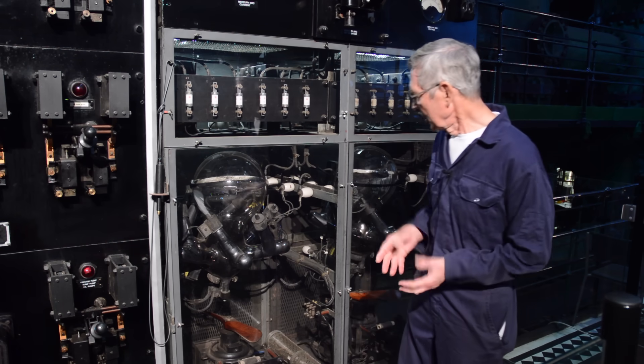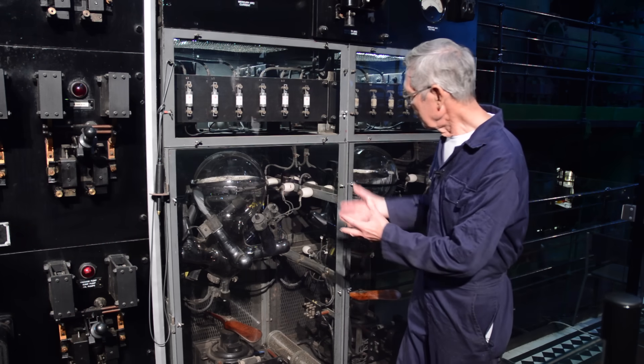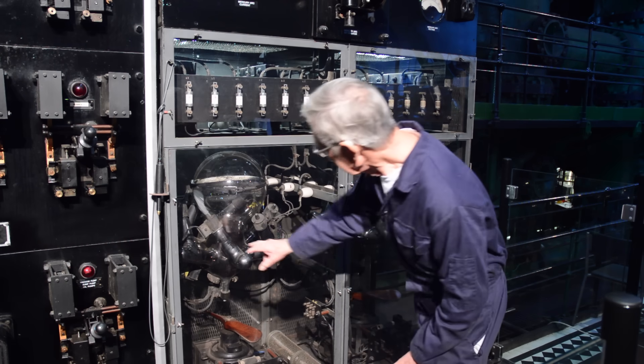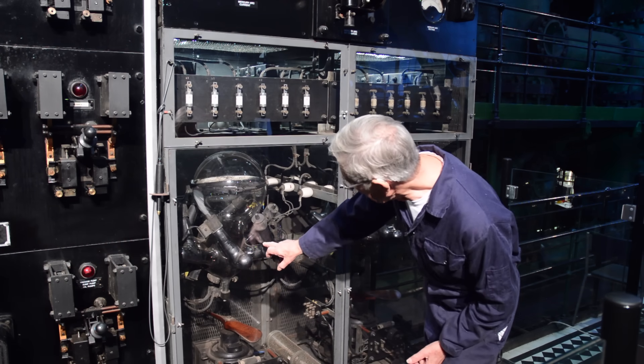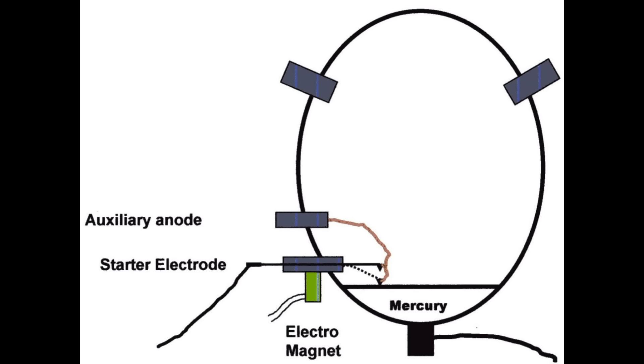Now to start a rectifier, you need an arc. And as it's a totally enclosed glass envelope, what you have is a spring wire from a small arm which is just out of sight, which has an electromagnet under it. When we start the rectifier, the electromagnet pulls the wire into the mercury pool. That shorts the electromagnet out, which releases the wire and creates a spark, which is then picked up by two small anodes at the back to keep the arc flowing.